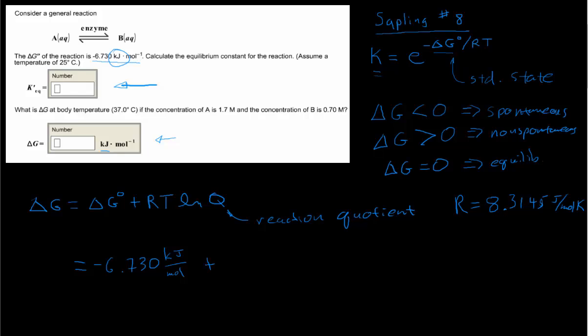And then plus R. Now we want to convert R into kilojoules. So that's going to be 8.3145. It was in joules, so I'm going to divide by a thousand. So that's times 10 to the negative third when you divide it by a thousand. Kilojoules per mole degree Kelvin. Very good. That's R.